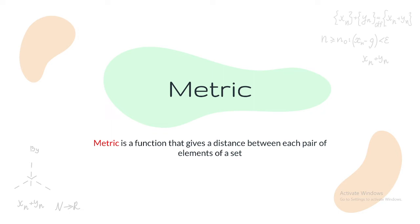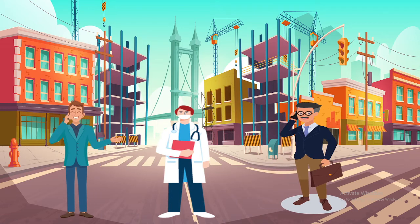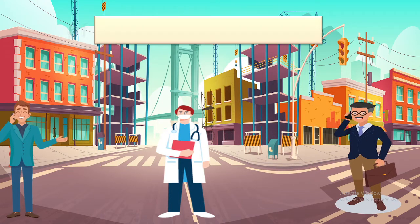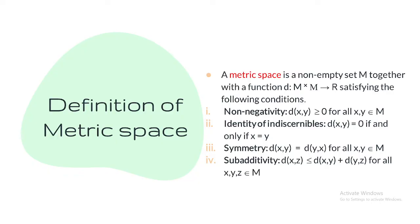Metric is a function that gives the distance between each pair of elements of a set. We all went through this from 2019 — the Corona situation — where we were always advised to follow social distancing of at least six feet. This is the distance concept from that time. With the help of God and medical practitioners, we finally recovered from COVID. And with this distance concept, I am going to define metric space.